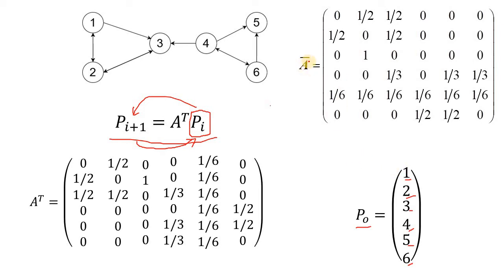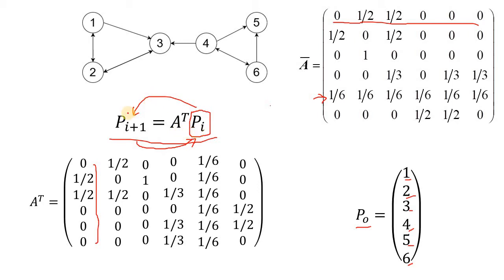Next, we take matrix A with the issue resolved and compute its transpose — converting rows into columns. After doing this for all rows, we have the transpose of A, and now we are ready to continue with this multiplication, which will give us our new page rank or prestige values.